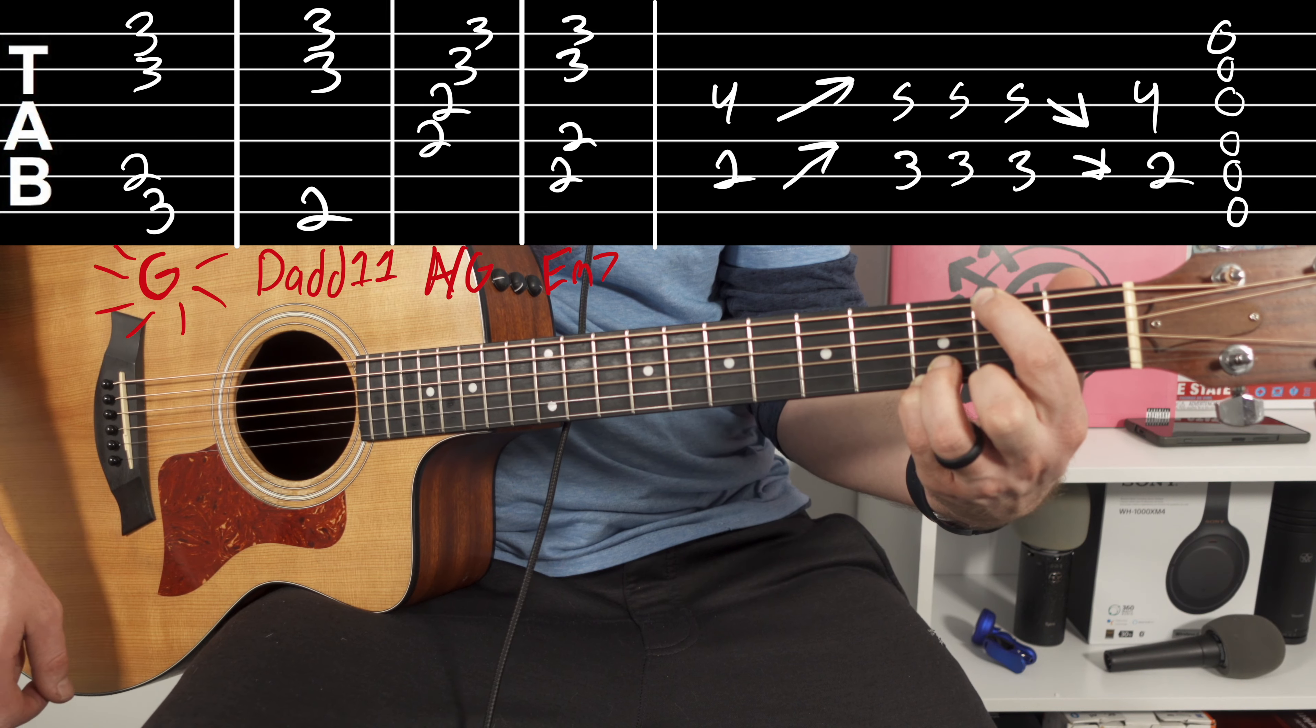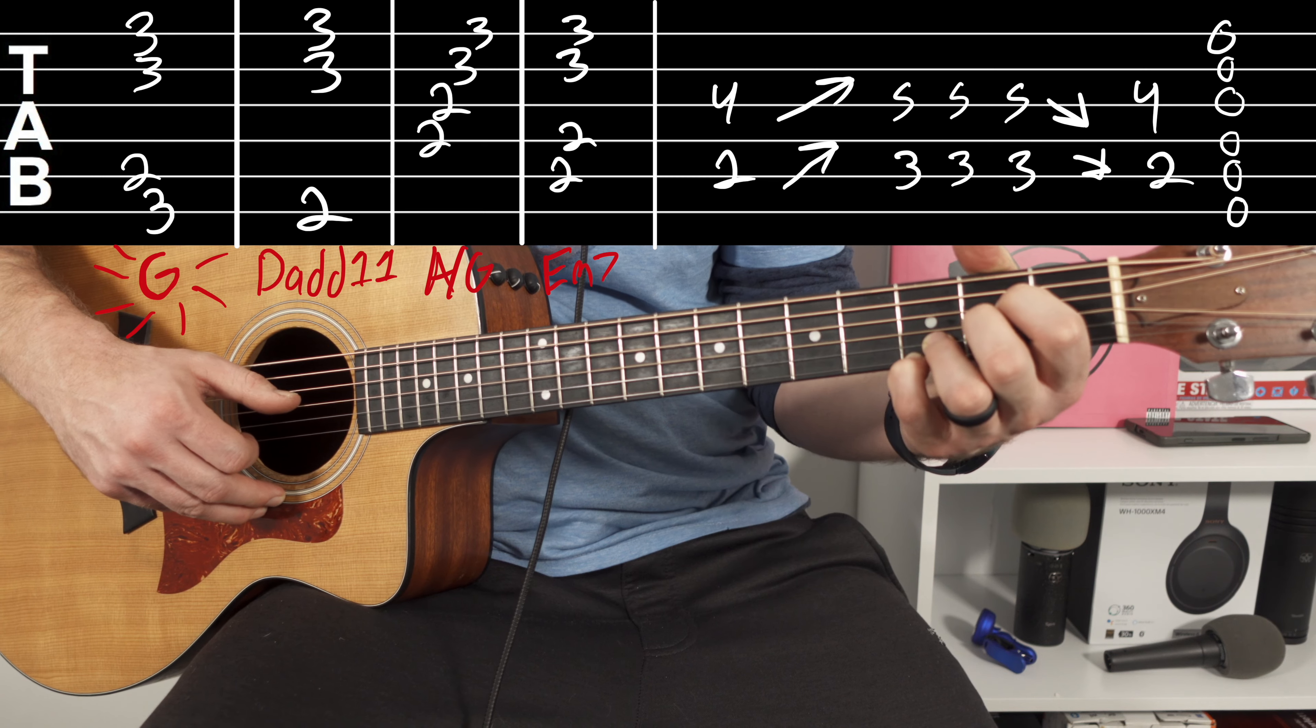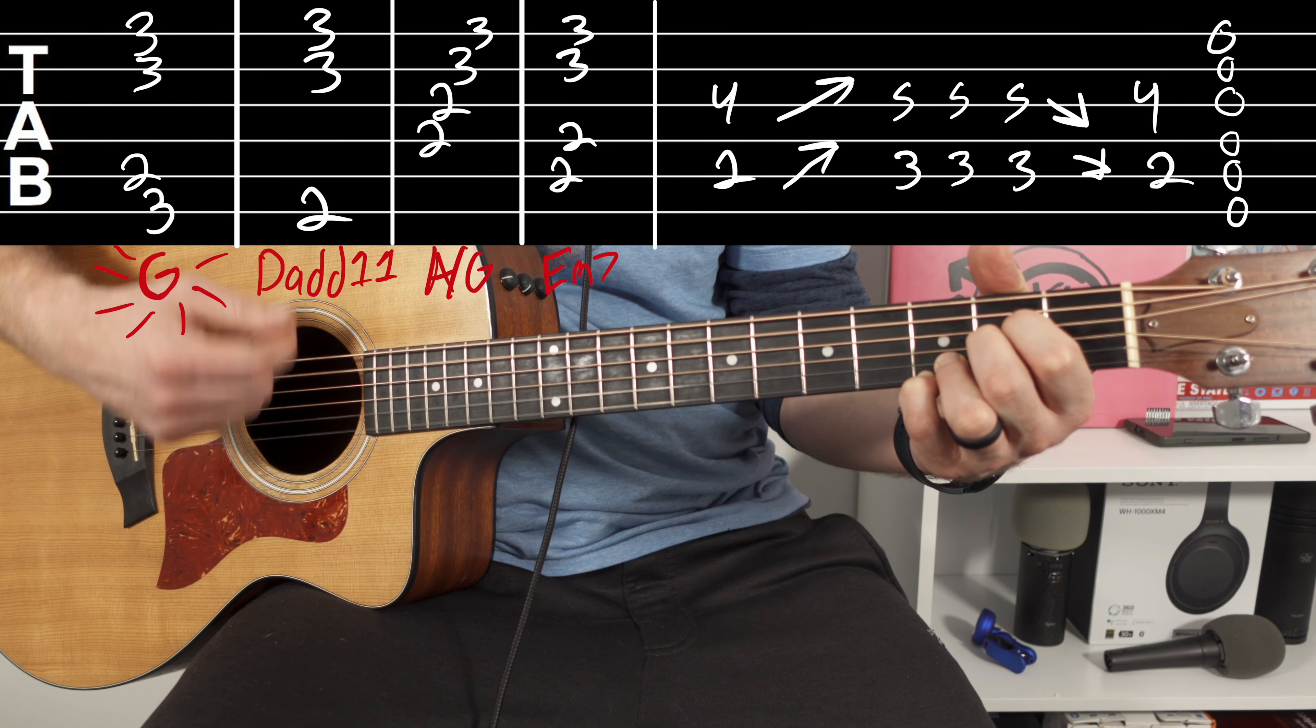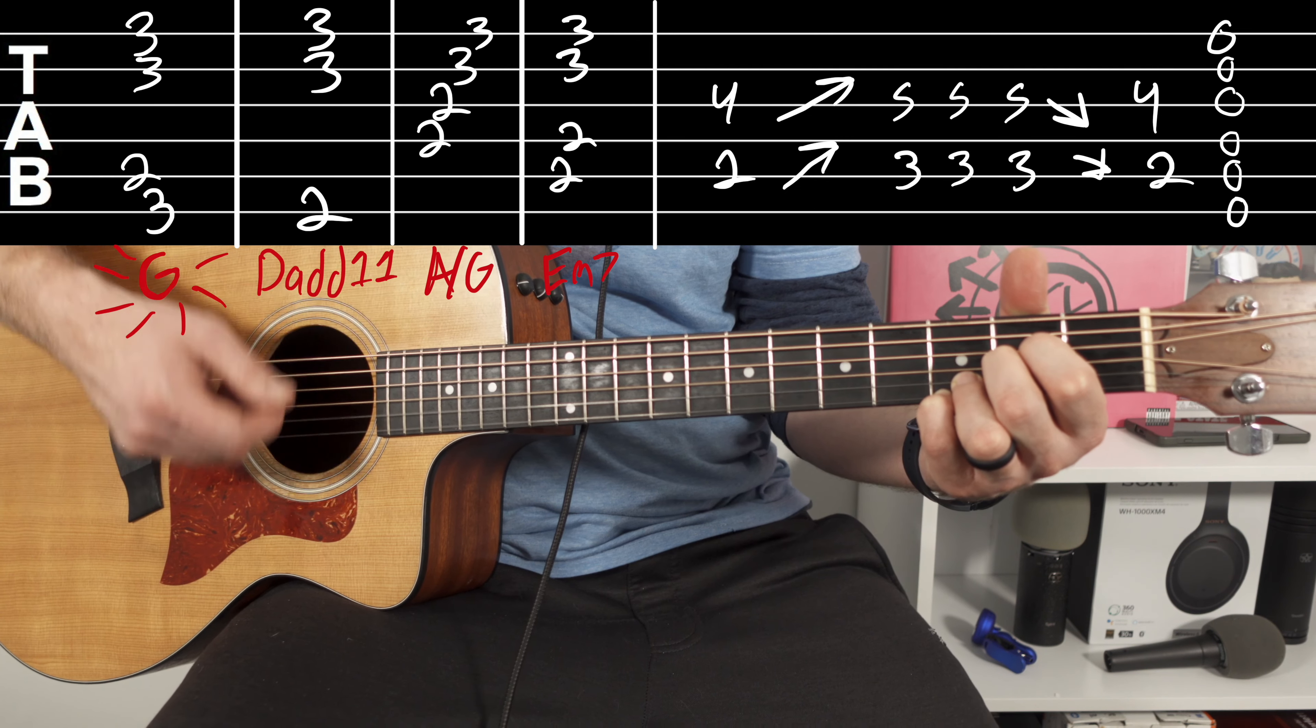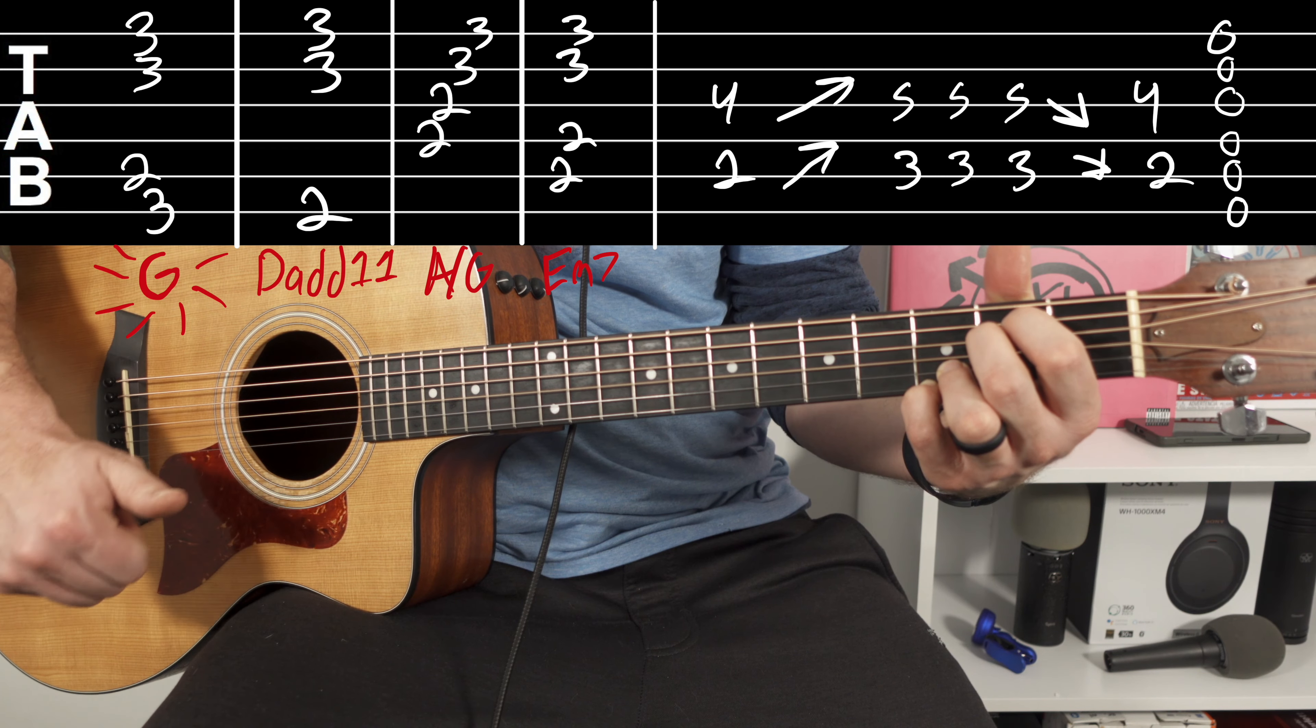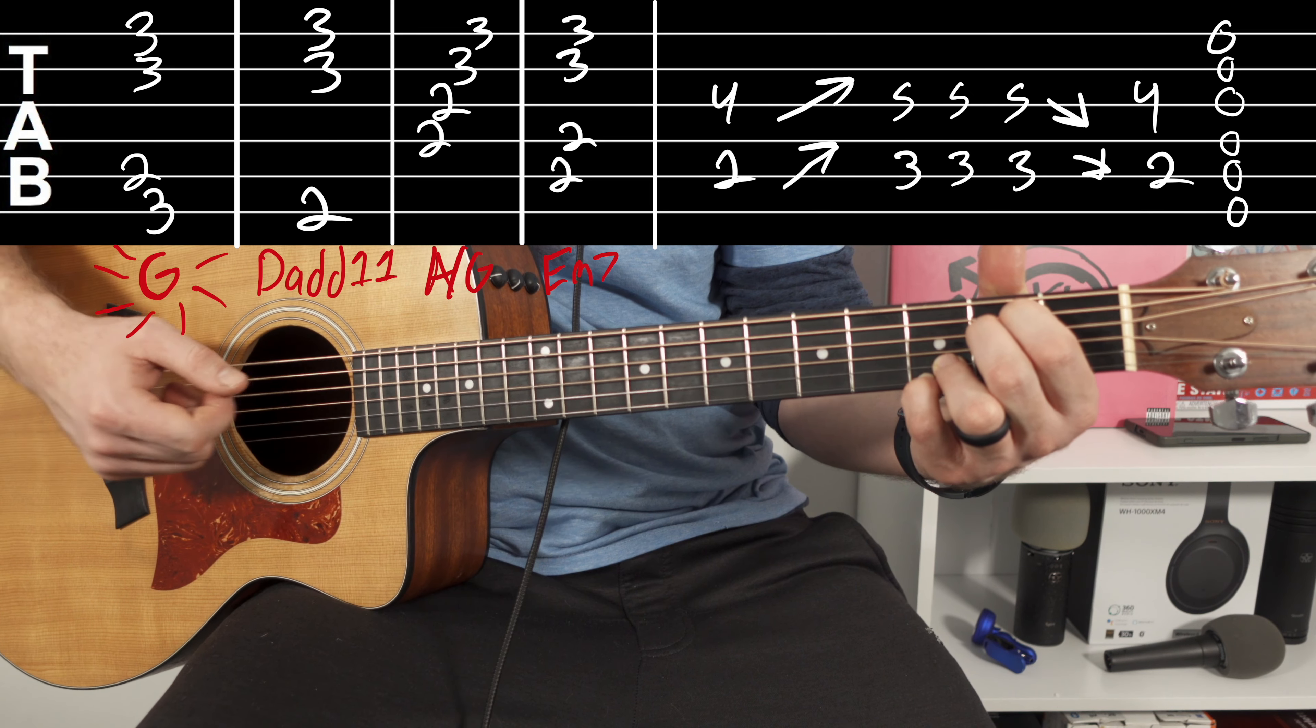The third chord is going to be A, which is going to be second fret on the D string and then second fret on the G string. The fourth chord is going to be E, which is basically bringing those fingers up. So it's going to be second fret on the A string and second fret on the D string.